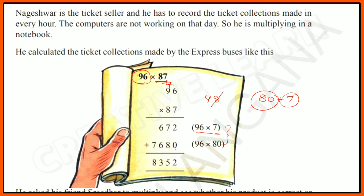Now add 672 and 7680: 2 + 0 = 2, 7 + 8 = 15 (write 5, carry 1), 1 + 6 + 7 = 13 (write 3, carry 1), 1 + 7 = 8. The total answer is 8352. The cost of 87 express tickets is 8352 rupees.